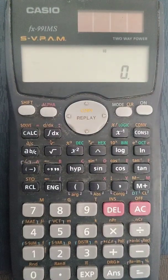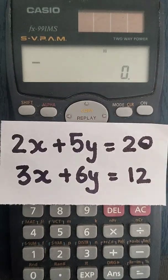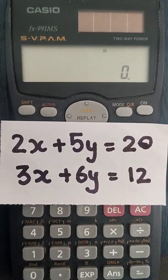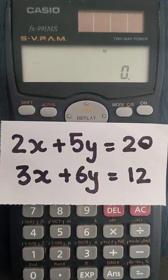Let us take an example for two unknowns with two equations. This is the example that we are going to take. We have the equation 2x plus 5y equal to 20, 3x plus 6y equals to 12.